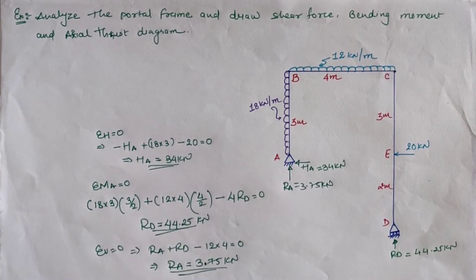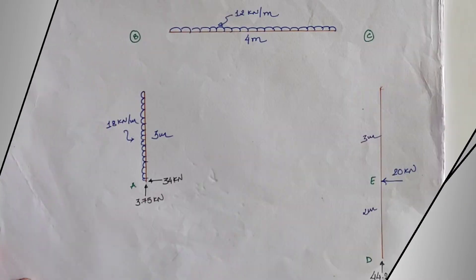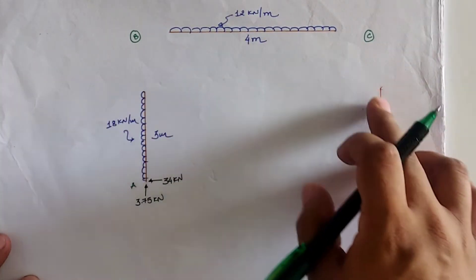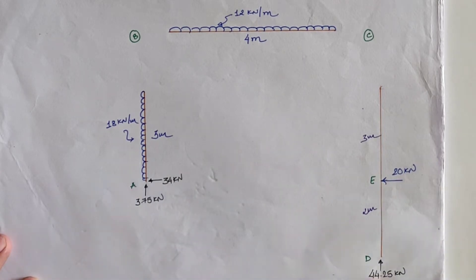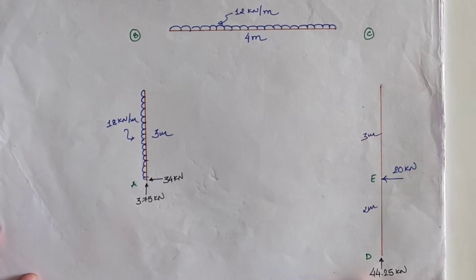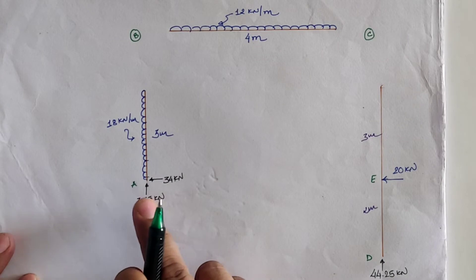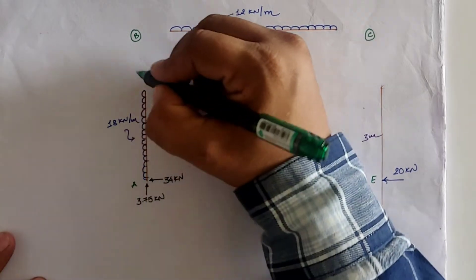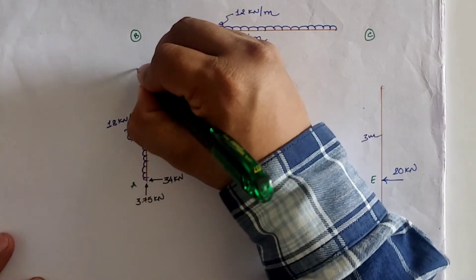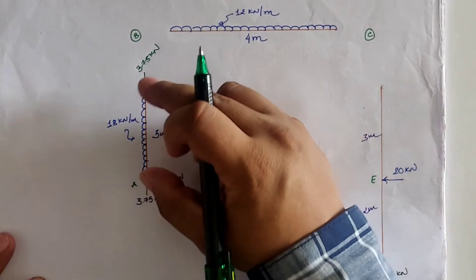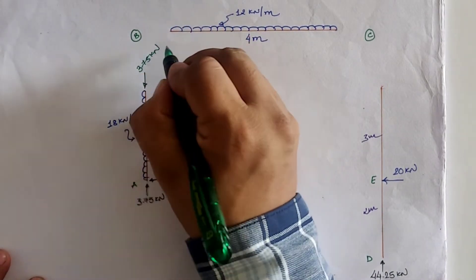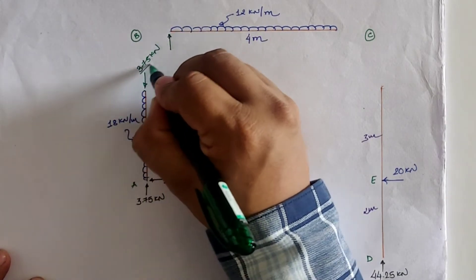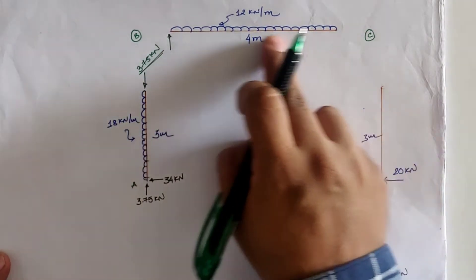After calculating support reactions, we discretize the frame into individual beam and column members, applying the given loads and support reactions as shown in the figure. To equalize each member using ΣH = 0, ΣV = 0, and moment conditions: at location A the vertical load is 3.75 kN upward, so we apply a downward load of 3.75 kN on member AB. Since there is no vertical load at point B in the actual member, we apply an equal and opposite load of 3.75 kN at B.